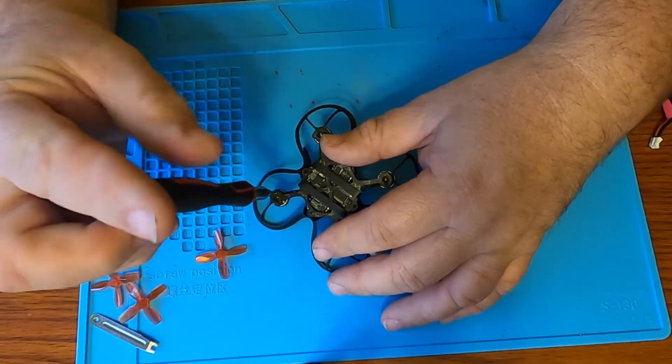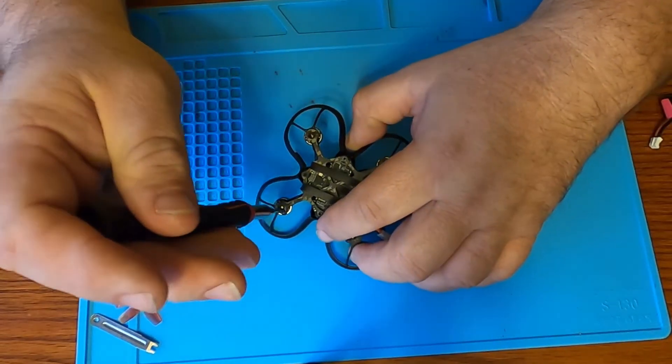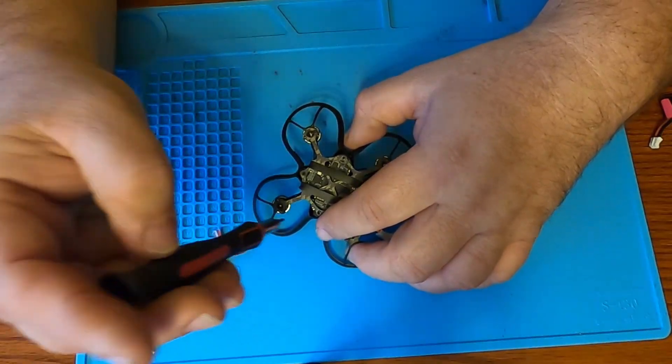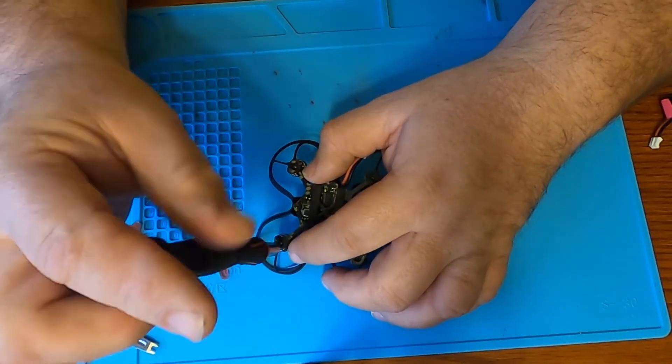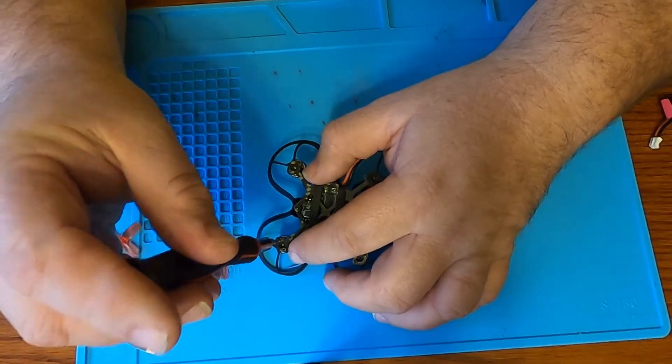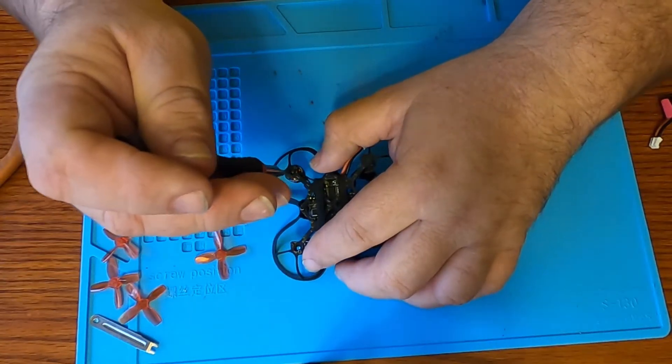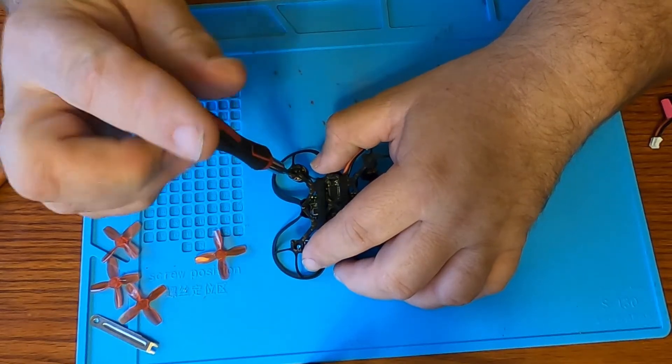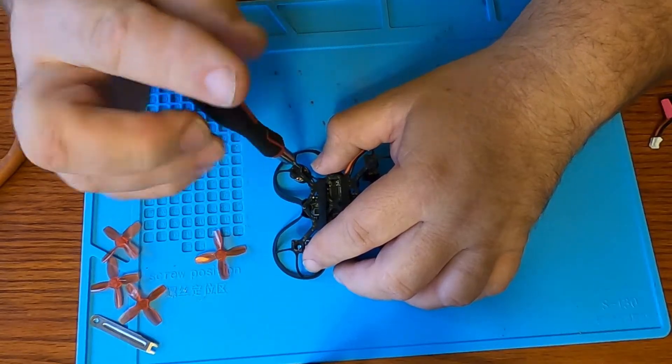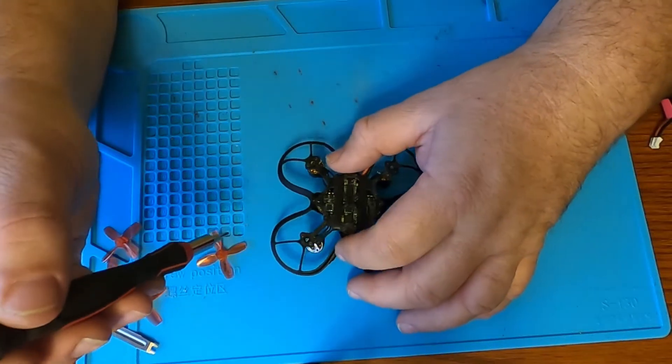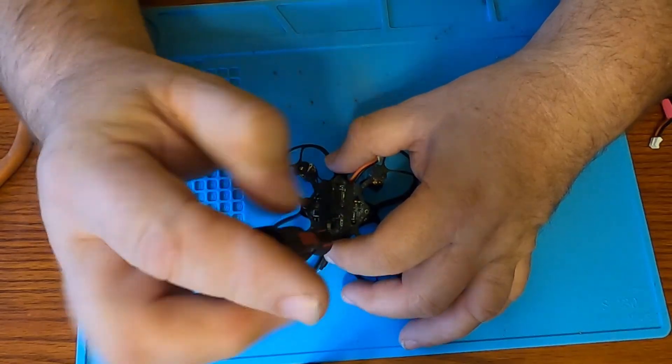Because the second part of the frame, this bit right here is all one piece - the whole arms, the canopy, you'll see in just a second. It's all one piece and it is sandwiched between the carbon fiber skeleton of the frame and the flight controller and the motors. Which means to do anything, if you have to change a motor or whatnot, to do anything you have to take every single thing off of this. Everything.